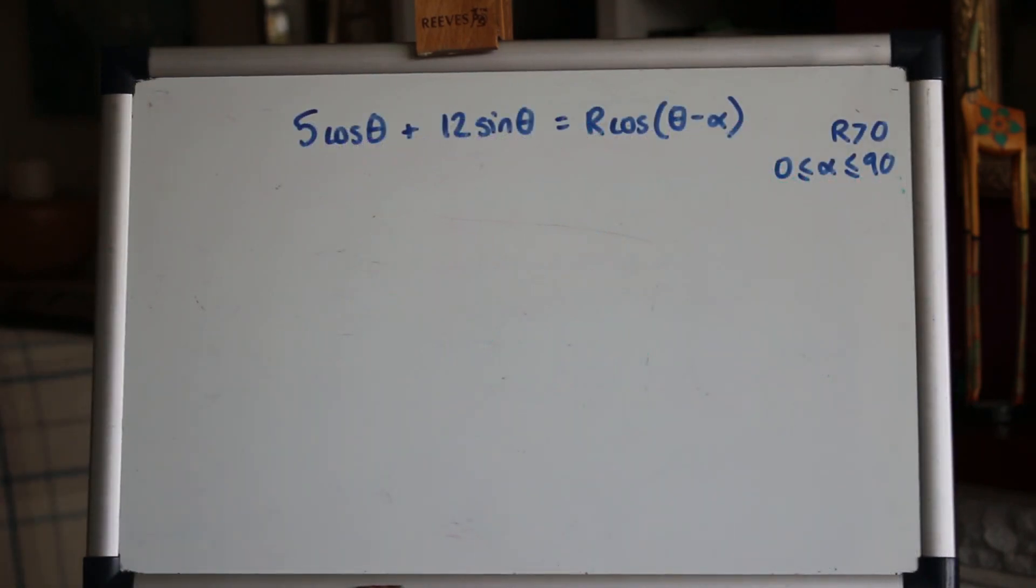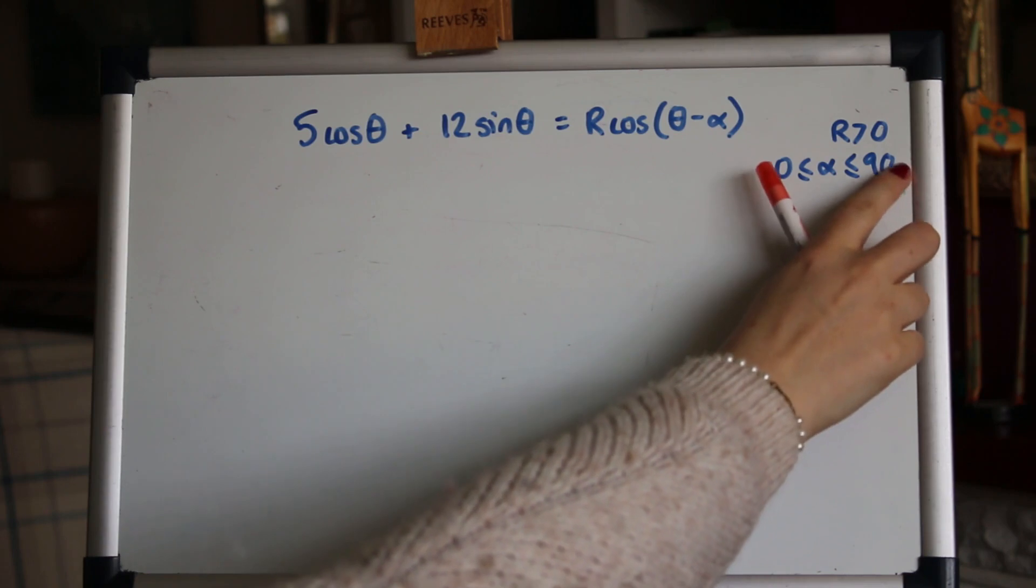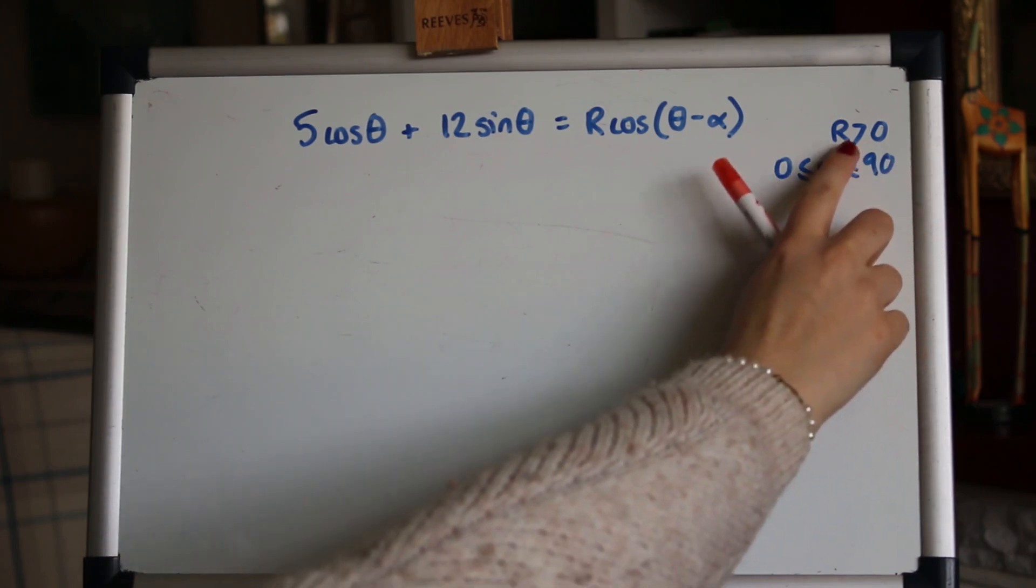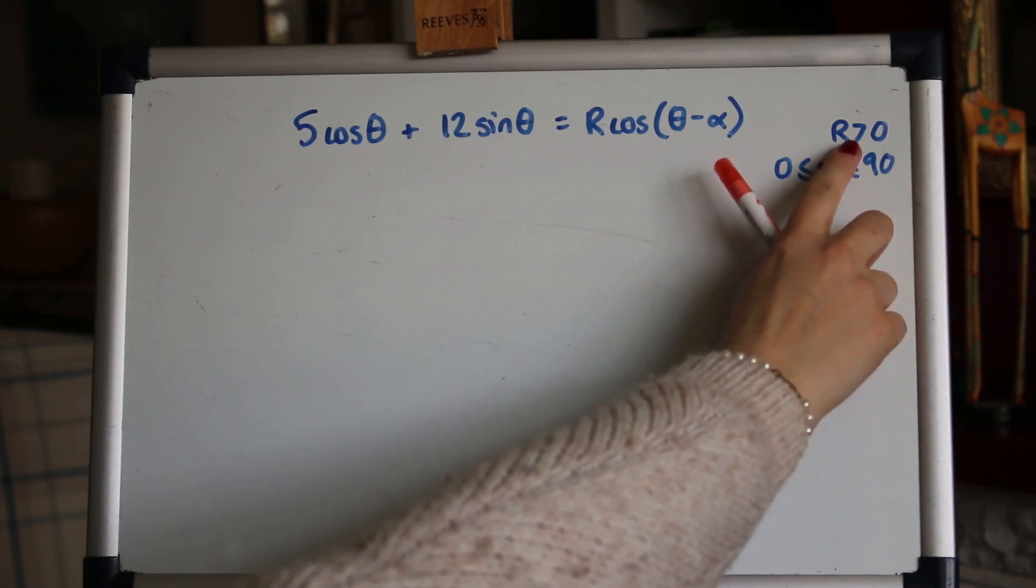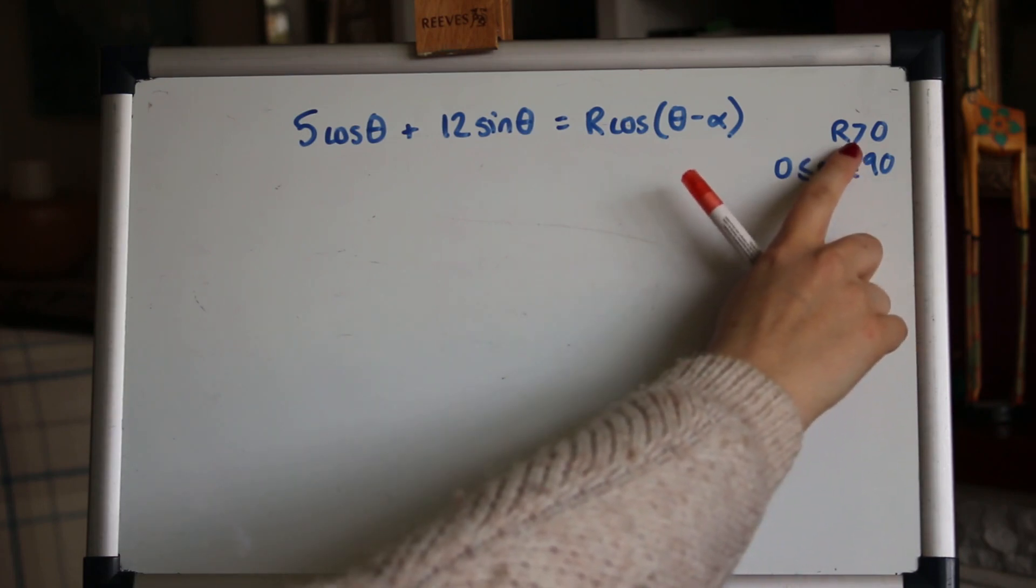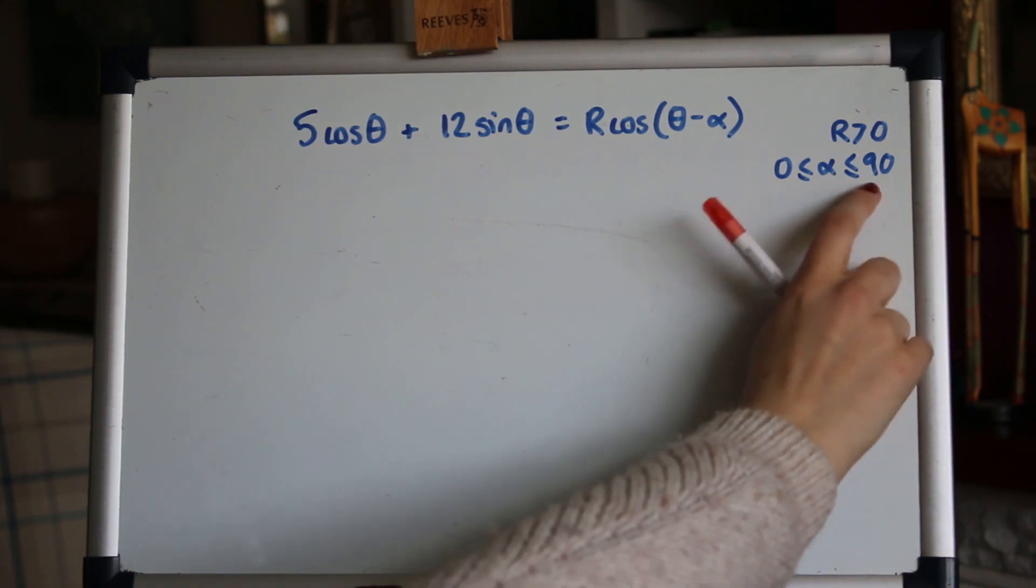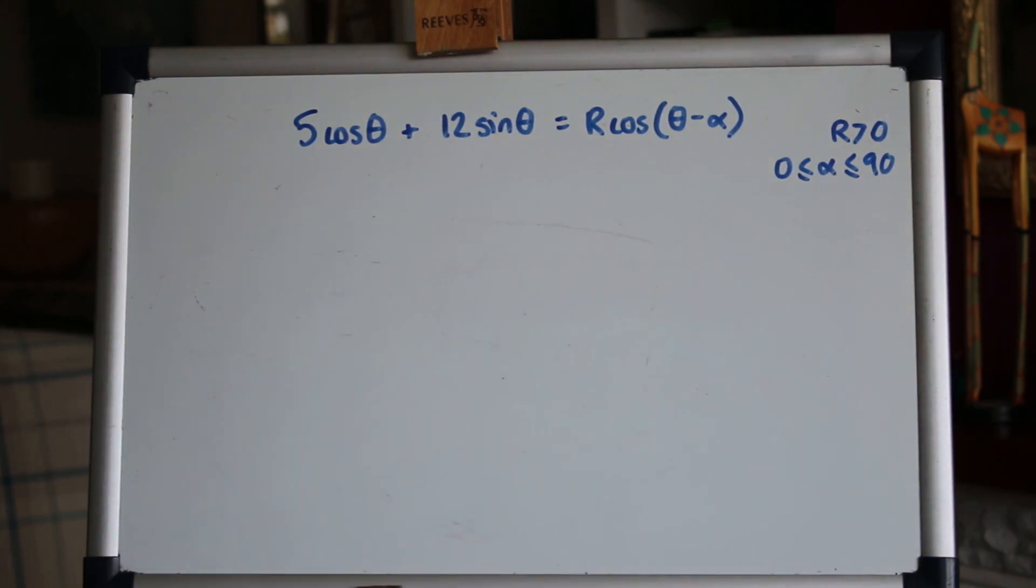Okay, so this exam question, first of all the first part of it asks you to write this in this form. Typically they'll give you ranges which are nothing to worry about really. It's just saying that R is positive, because remember you get the R by square rooting. Obviously you'd get two solutions when you square root, positive and a negative term. So they're just clarifying they want the positive form. And the first acute angle when you do the inverse tan, so between 0 and 90. So they're nothing to worry about really. It's exactly as soon as we were doing before. So let's have a go at that now. Do pause the video and have a go at this yourself.